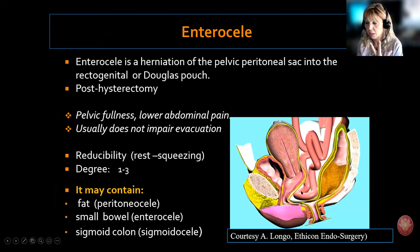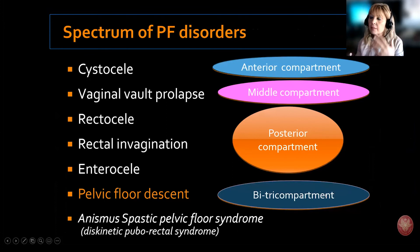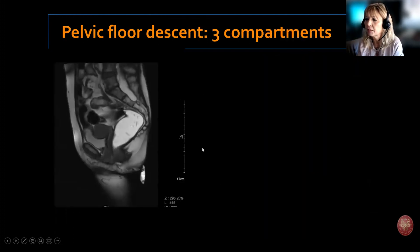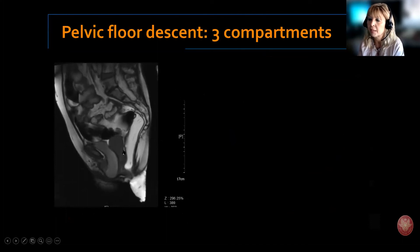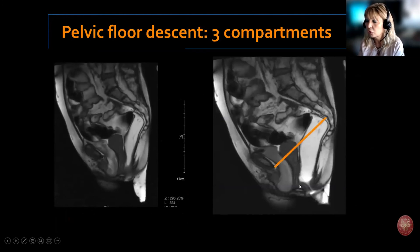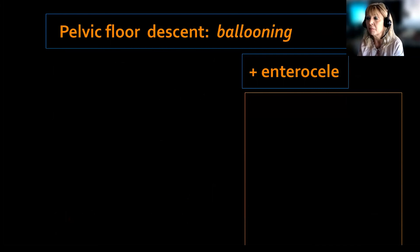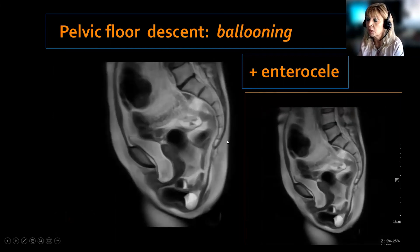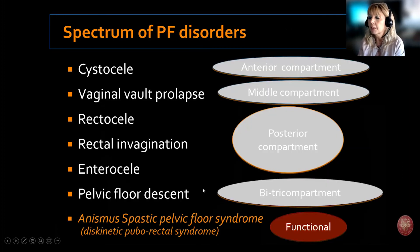Don't forget also enterocele, which is very common, particularly after hysterectomy. It usually contains small bowel and is very easily detected by MRI. And finally, pelvic floor descent, which is sometimes the end stage of chronic pelvic floor disorders, can determine complete weakness of the entire pelvic floor with severe prolapse of all three compartments — a sort of ballooning of the posterior compartment with very severe rectocele, rectal descent, and enterocele.